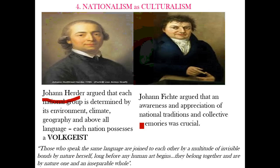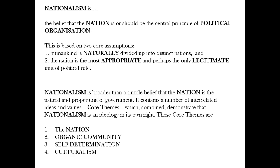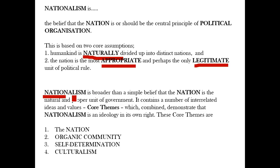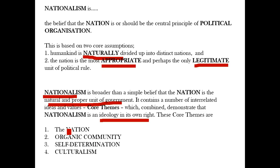In summary, there are four core themes of nationalism. Nationalism itself can be defined as the belief that the nation is or should be the central principle of political organization, based on two core assumptions: that humankind is naturally divided into distinct nations, and that the nation is the most appropriate and perhaps the only legitimate unit of political rule. Nationalism is broader than this simple belief and has a number of interrelated core themes which combined demonstrate it is an ideology in its own right: the nation, organic community, self-determination, and culturalism.